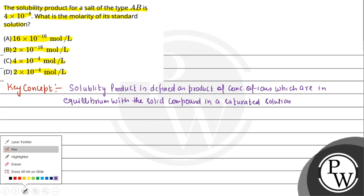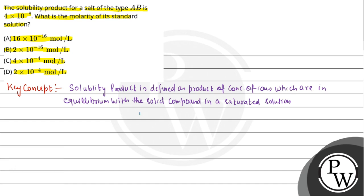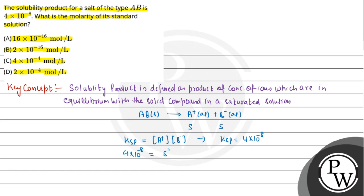Ab isko discuss karte hain. Yahan par AB type ka solid diya hua hai. Isko dissolve karein toh yeh breakdown karega as: AB(s) → A⁺(aq) + B⁻(aq). Agar solubility S hai, toh KSP = [A⁺][B⁻]. KSP yahan diya hua hai 4 × 10⁻⁸, jo ki equal hai S squared.